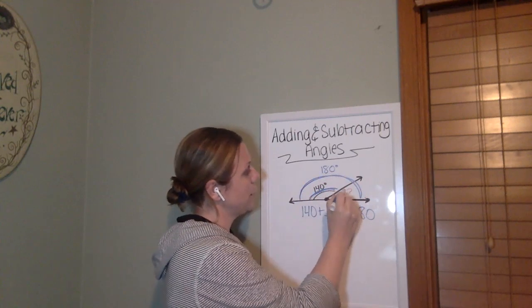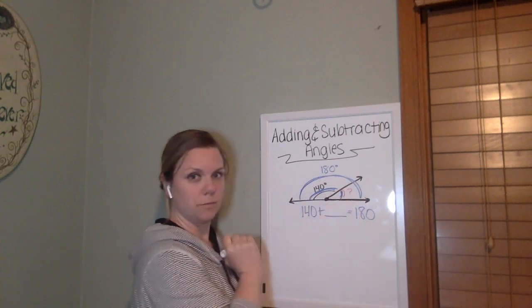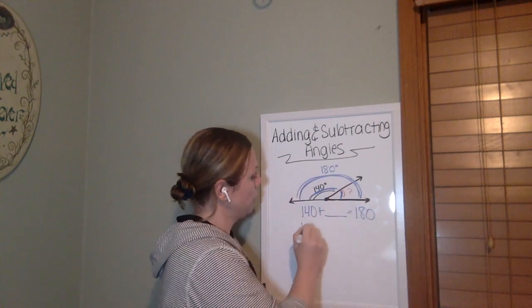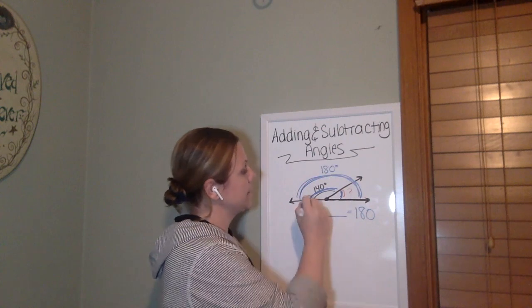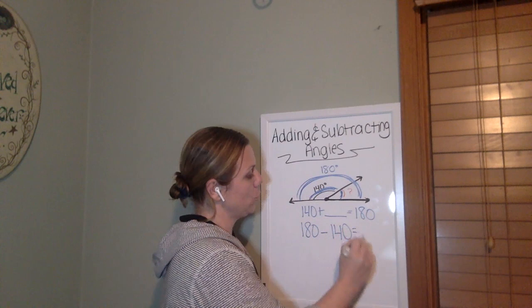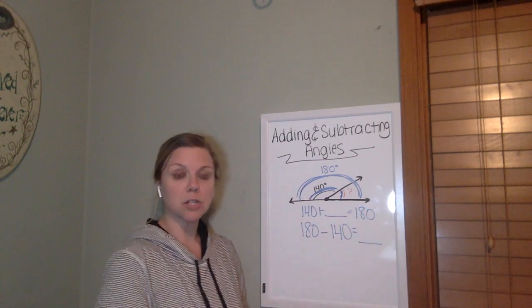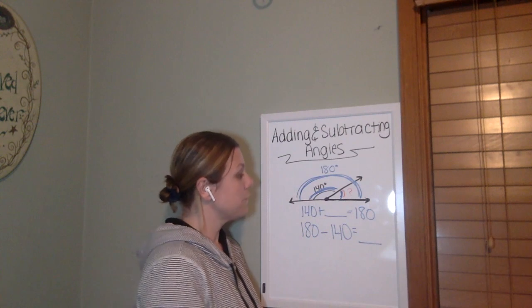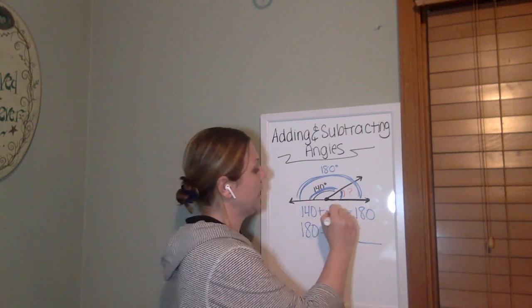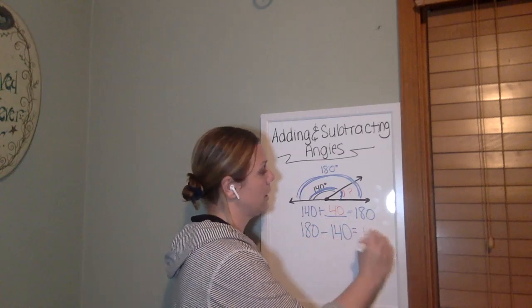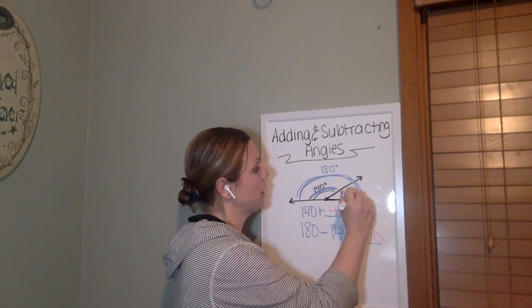This is 140, so what's missing? The other way we could think about that is 180, which we know is our total, minus our known angle of 140 equals what? And we'll get the same answer either way we look at it. So I know that 140 plus 40 more would give me 180. Let's check if that also makes sense here. That would make this a 40 degree angle.